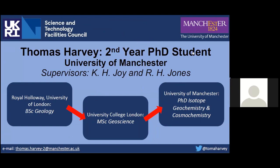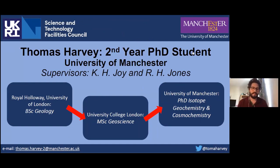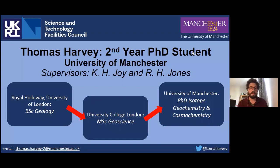Hi everyone, I'm Tom and I'm also a PhD student at the University of Manchester, in my second year studying in the isotope geochemistry and cosmochemistry research group. I've approached planetary science from a geology background — I did my undergraduate in geology at Royal Holloway, University of London, and then completed a taught master's in geoscience at University College London. As part of that degree I completed a research project investigating the origins of josefinite, which is a terrestrial native metal from Oregon. My experience in that project led me to apply to my current project at the University of Manchester, researching metal particles from extraterrestrial bodies such as asteroids and the moon, supervised by Katie Joy and Rhian Jones.